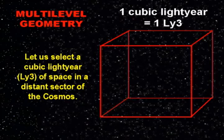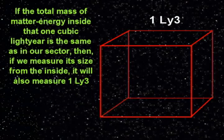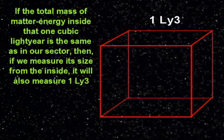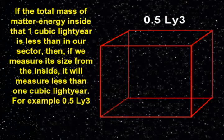Let us select a cubic light year of space in a distant sector of the cosmos. If the total mass of matter energy inside that one cubic light year is the same as in our sector, then if we measure its size from the inside, it will also measure one cubic light year. If the total mass is less than in our sector, then it will measure less — for example, 0.5 cubic light years.